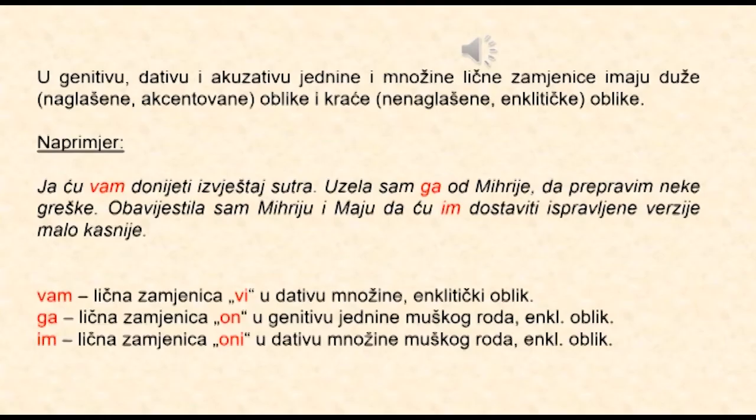Primijetili ste da lične zamjenice u genitivu, dativu i akuzativu jednine i množine imaju duže naglašene (akcentovane) oblike i kraće nenaglašene enklitičke oblike. Na primjer: Ja ću vam donijeti izvještaj sutra. Uzela sam ga od Mihrije da prepravim neke greške. Obavjestila sam Mihriju i Maju da ću im dostaviti ispravljene verzije malo kasnije.